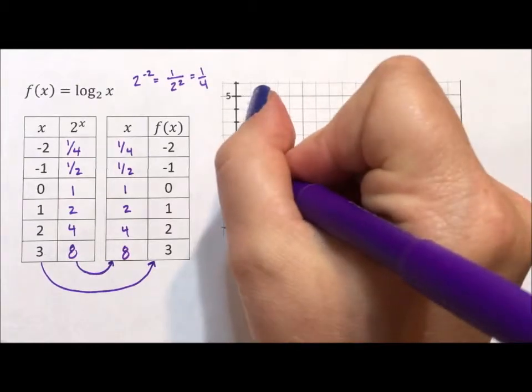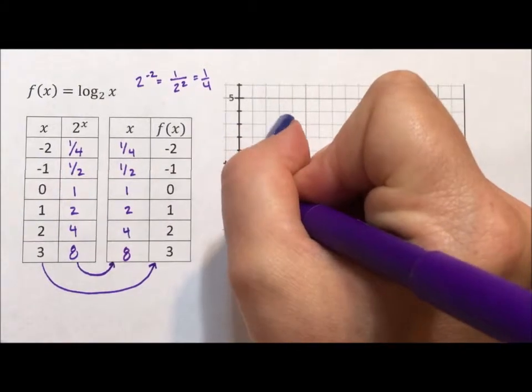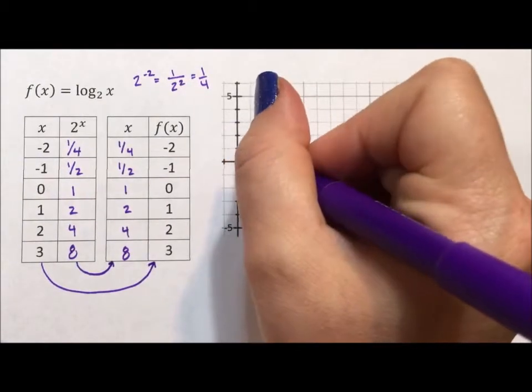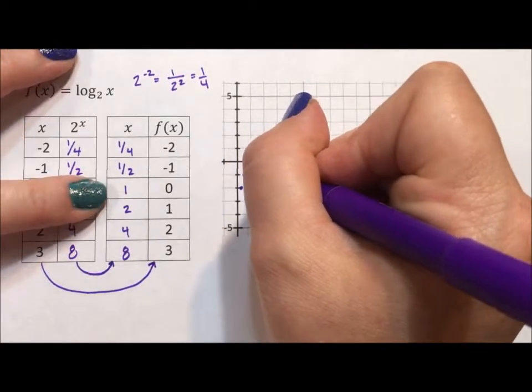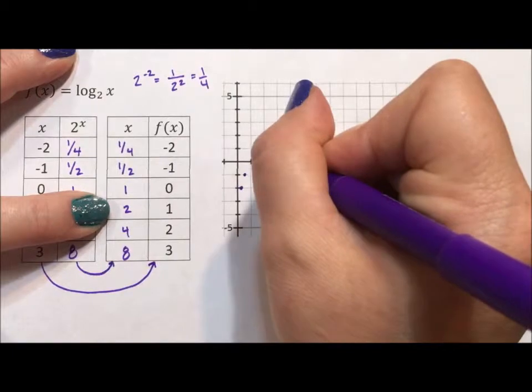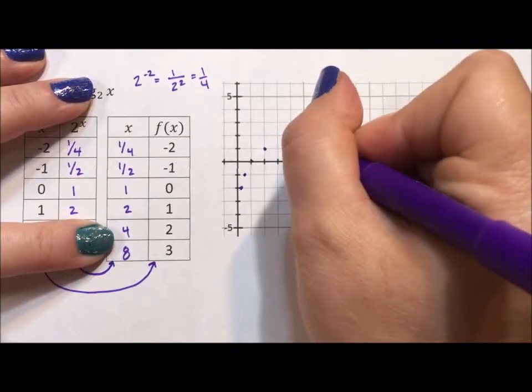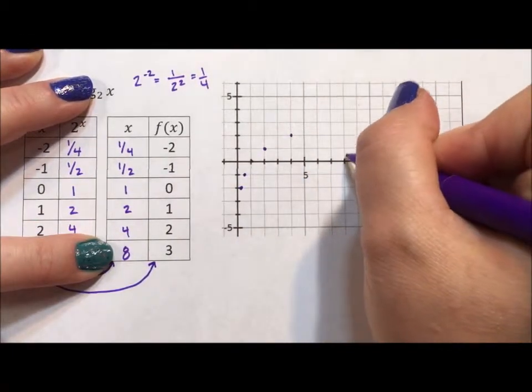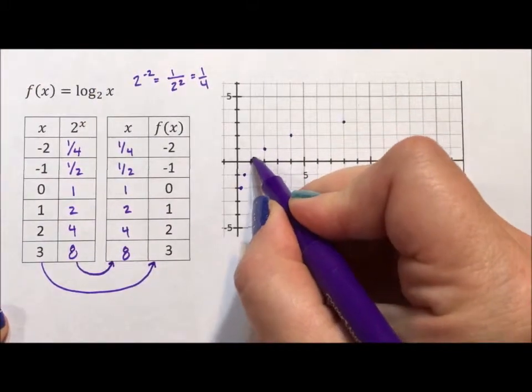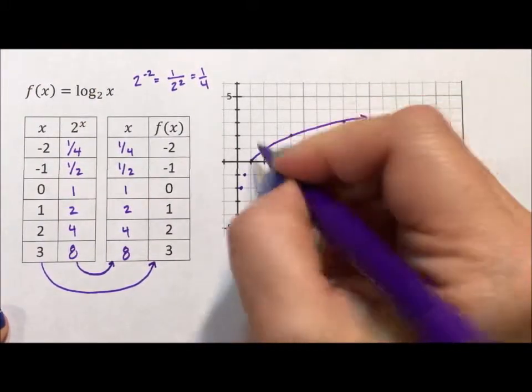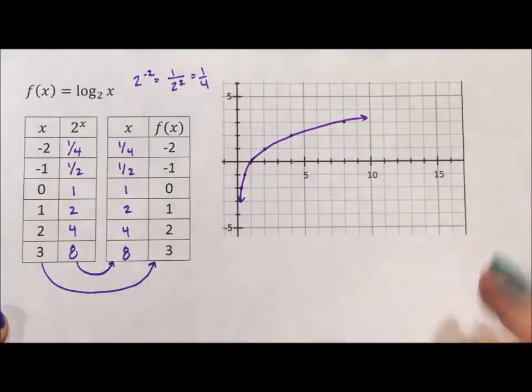So when I graph this I have 1 fourth negative 2, I have 1 half negative 1, 1, 0, 2, 1, 4, 2, and 8, 3. I graph this with a smooth line and I'm done.